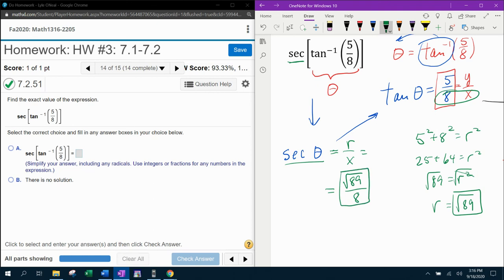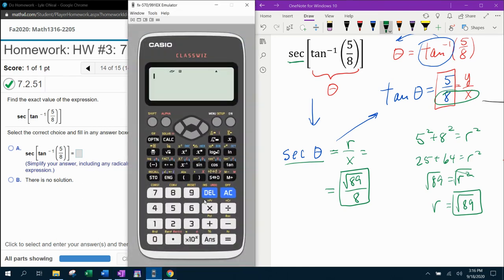And then if we plug that in to our calculator, we can check and see if that's right. But I don't have a secant button. Oh, I know, secant is the reciprocal of cosine. So I should be able to do 1 over cosine of the inverse tangent of 5 over 8.